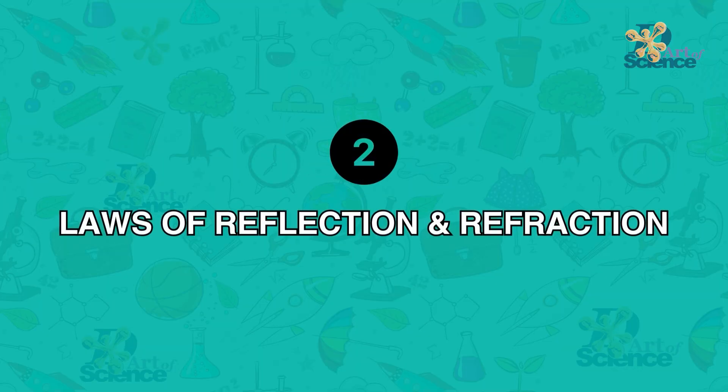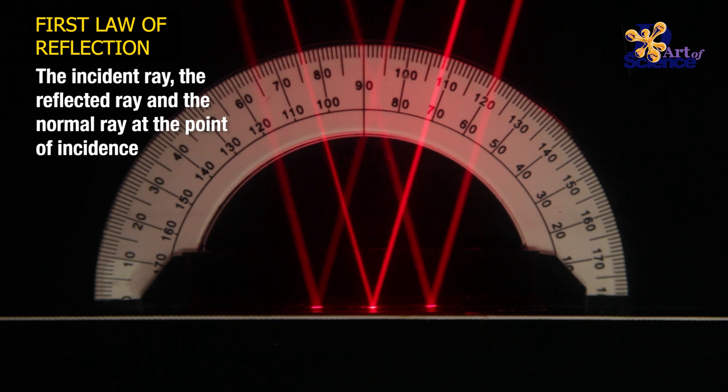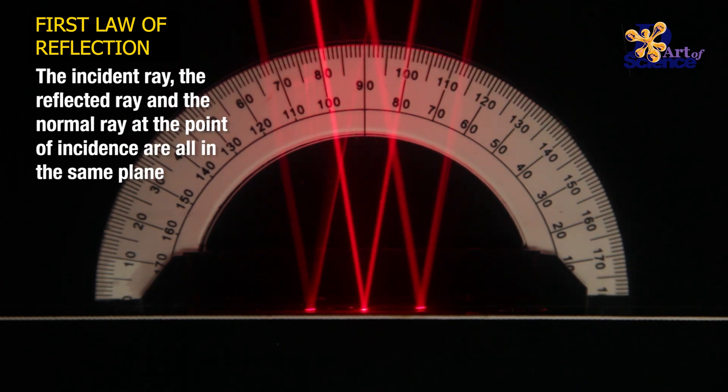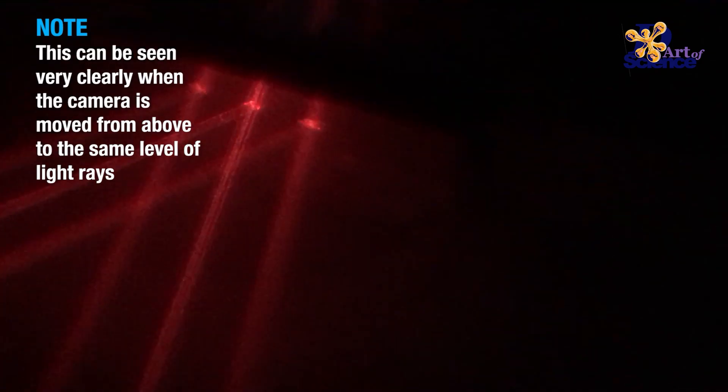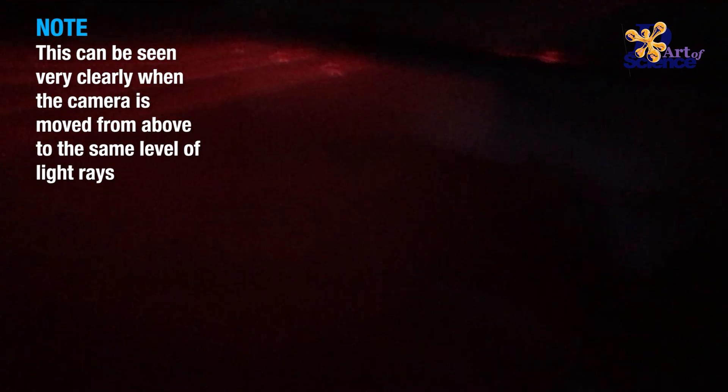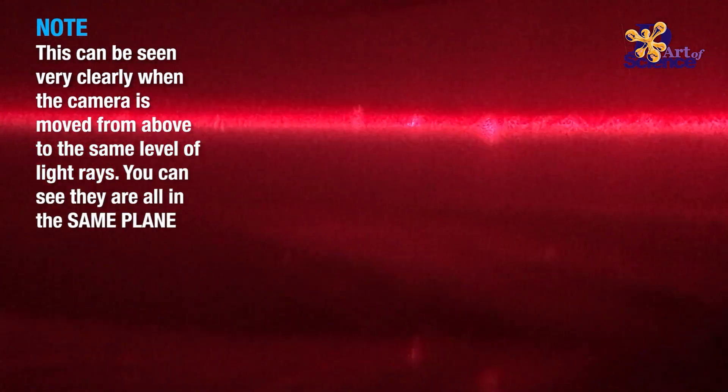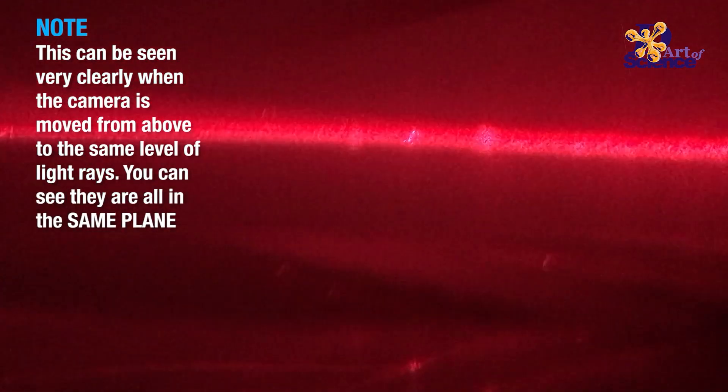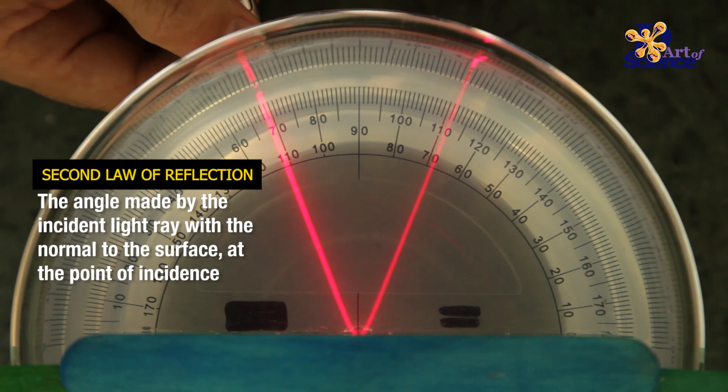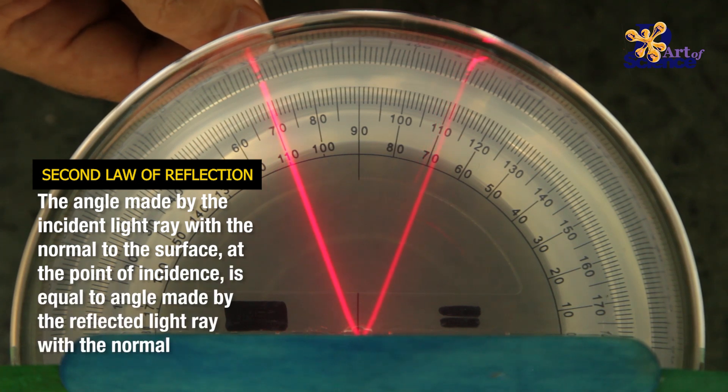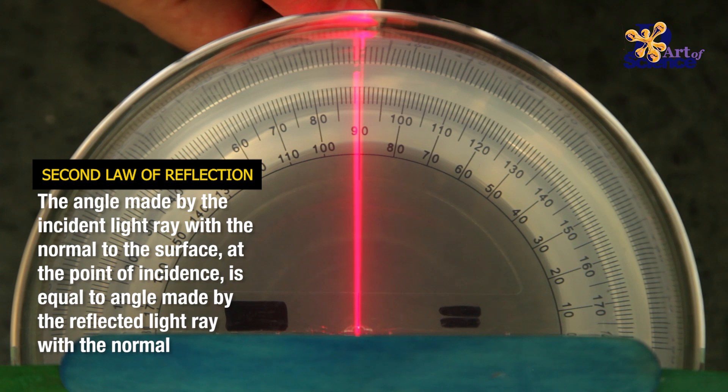The second point of differentiation is the laws that govern these phenomena. The two main laws in reflection: first, the incident ray, reflected ray, and the normal ray to the surface of the mirror all lie in the same plane. The second one is that the angle of reflection is equal to the angle of incidence.